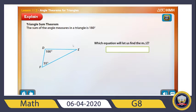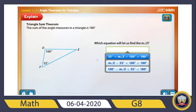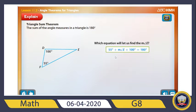How can I find angle E? Which equation can help us find the measure of angle E? We said: measure of E plus measure of D plus measure of F equals 180. So: measure of E plus 100 plus 55 equals 180. This is the correct equation, and using it we can find the measure of angle E.